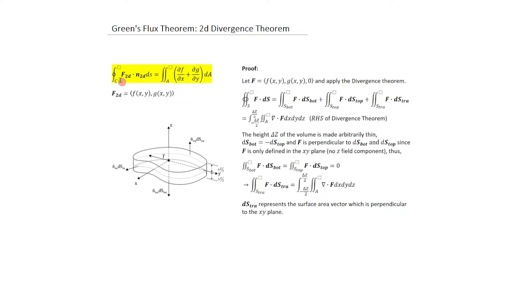What we are trying to prove is that if you take a closed contour integral of a 2D vector field, dotted with the normal to the contour and integrated around the closed contour, that is equivalent to an expression involving partial derivatives integrated over the area bounded by this closed contour. That is basically what we set out to prove.